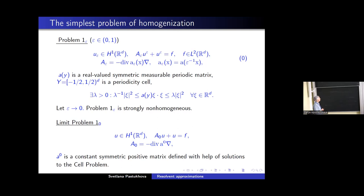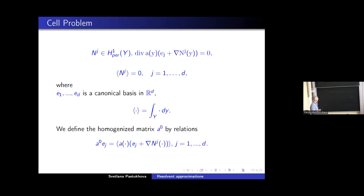And coefficient matrix a_ε is obtained by homothety from periodic matrix A(y), which is assumed to be real valued symmetric and satisfying the two-sided inequality with some constant λ, which we will call ellipticity constant. From long ago, it is known that the homogenized problem or limit problem will be the elliptic problem of the same class, but much simpler with constant coefficients.